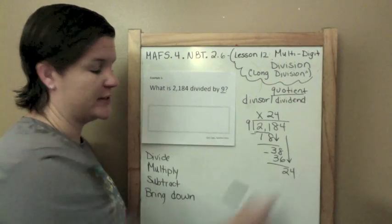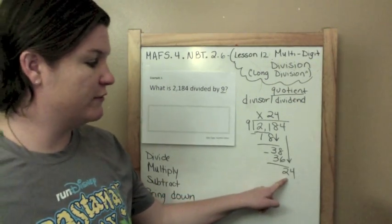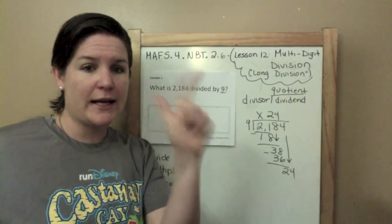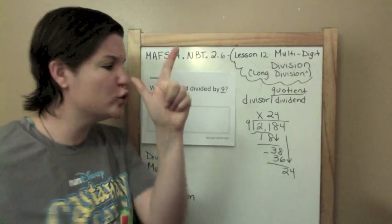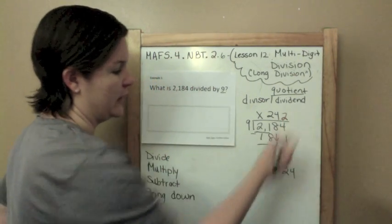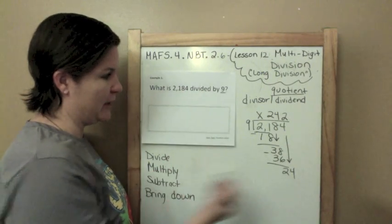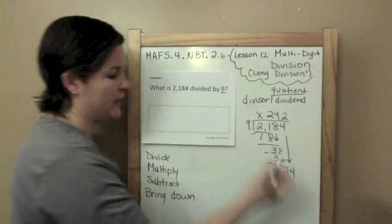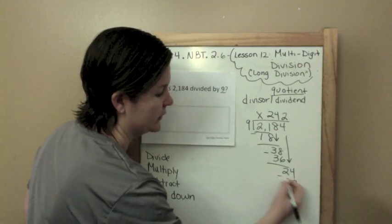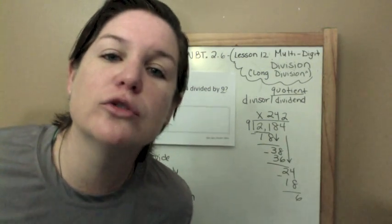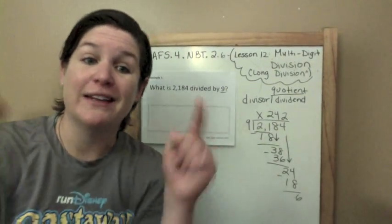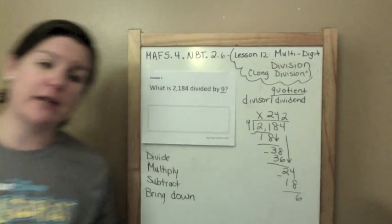Four times 9, that's my multiplication step. Now I subtract: 38 minus 36 is 2. Let's see, do I have a digit to bring down? Yes I do, it's the 4. Bring that baby down! Start it over: divide, multiply, subtract and bring down. Nine, how many times does 9 go into 24? 9, 18, the next one will be 27 which is too much, so just 2 times.